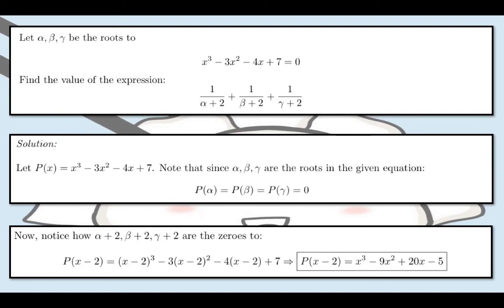So, to get P(x-2), simply replace all the x's by x-2 from P(x). Simplifying, we're going to get that P(x-2) = x³ - 9x² + 20x - 5.